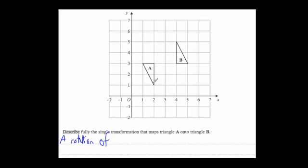Let's consider the degrees. It's been turned right the way around. You can see that the top of this triangle has become the base of this triangle, so it's been rotated through 180 degrees. With 180 degrees you don't necessarily need to specify clockwise or anti-clockwise because it could be either, but I'm going to state it: 180 degrees clockwise about the point...